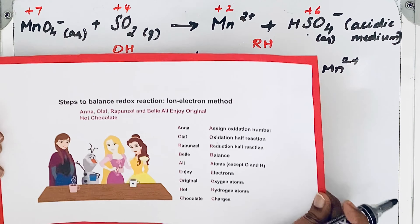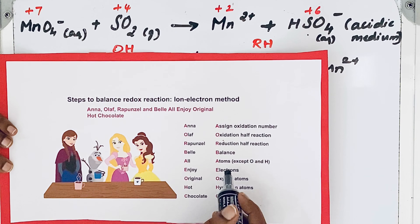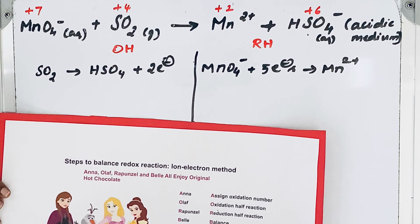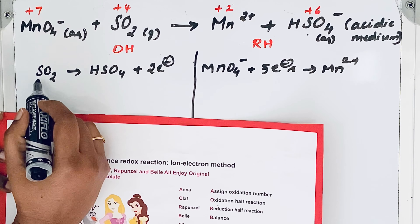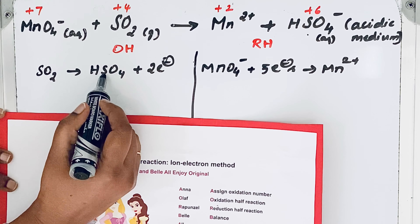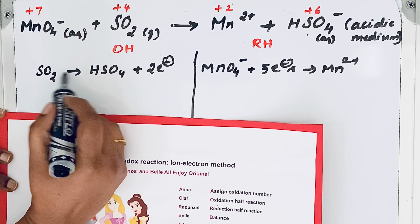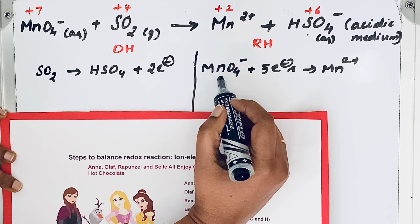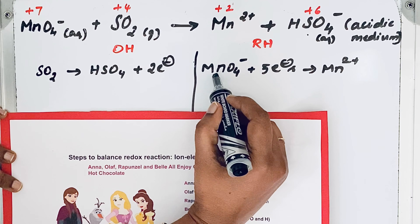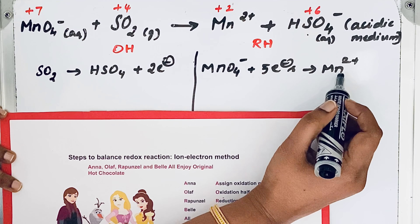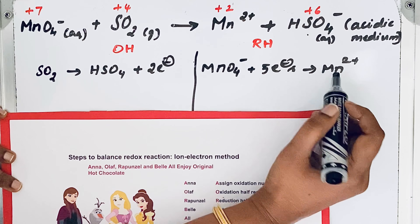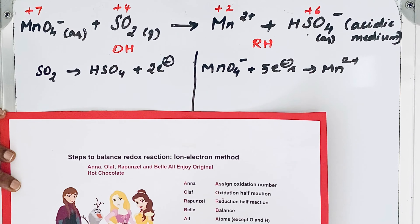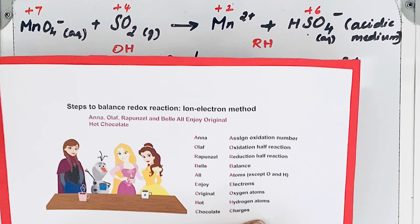Now come to the next step: balance atoms other than oxygen and hydrogen. Here, sulfur — there is one sulfur atom on each side, so it is already balanced. Now for manganese — there is one manganese on each side, so it is also completely balanced.